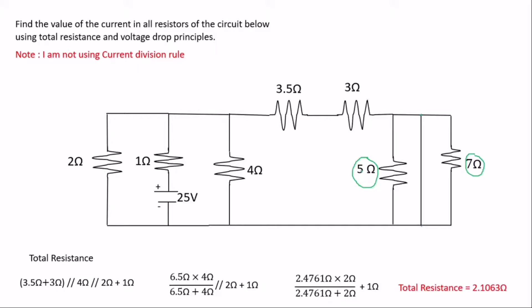Now that we have the total resistance, we can find the total current. From the principle, V = I × R_total. So the total current is the 25 volts given to us divided by the total resistance of 2.1063 ohms, which gives us a total current of 11.8682 amperes.